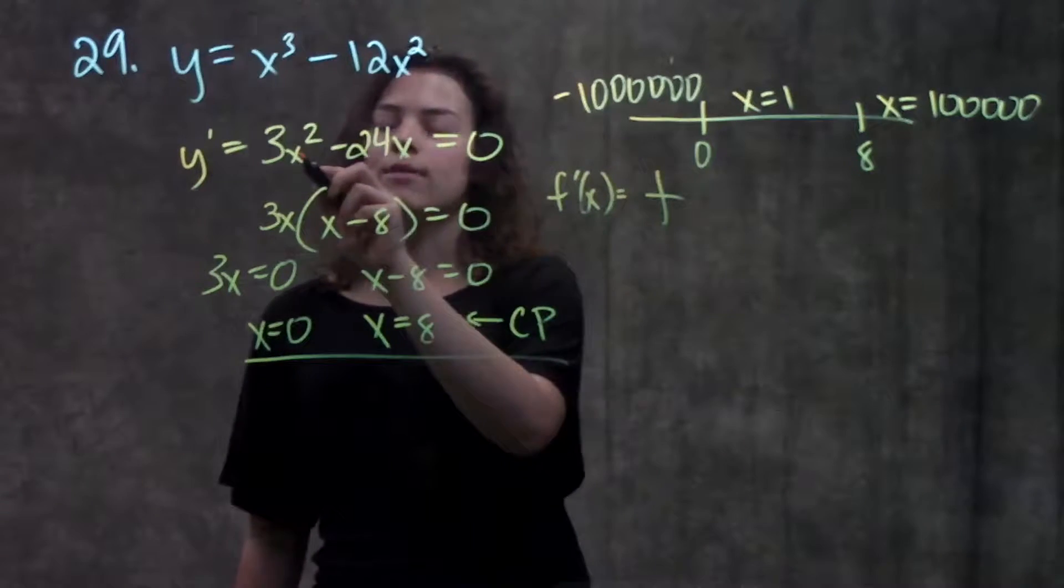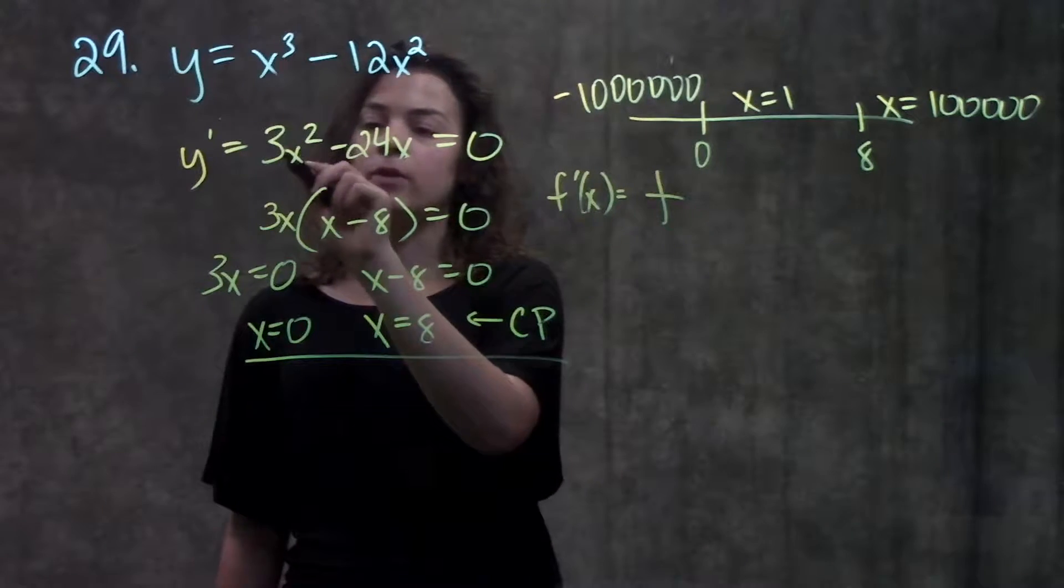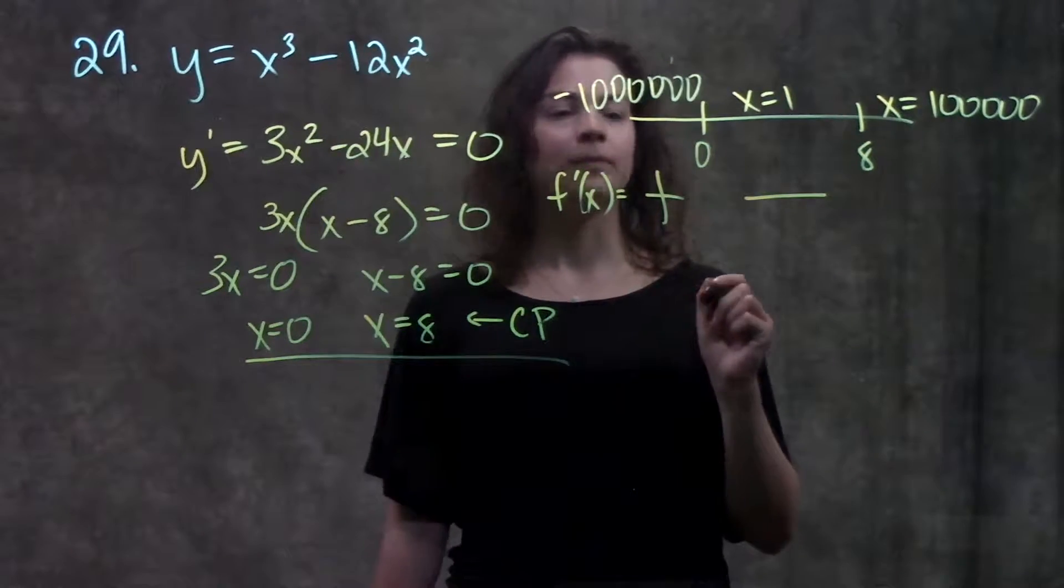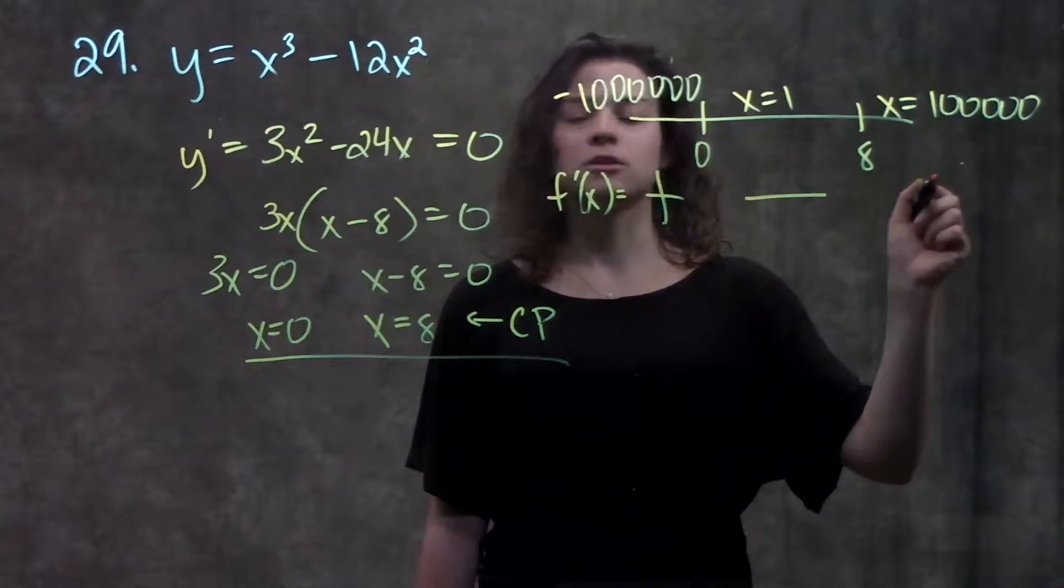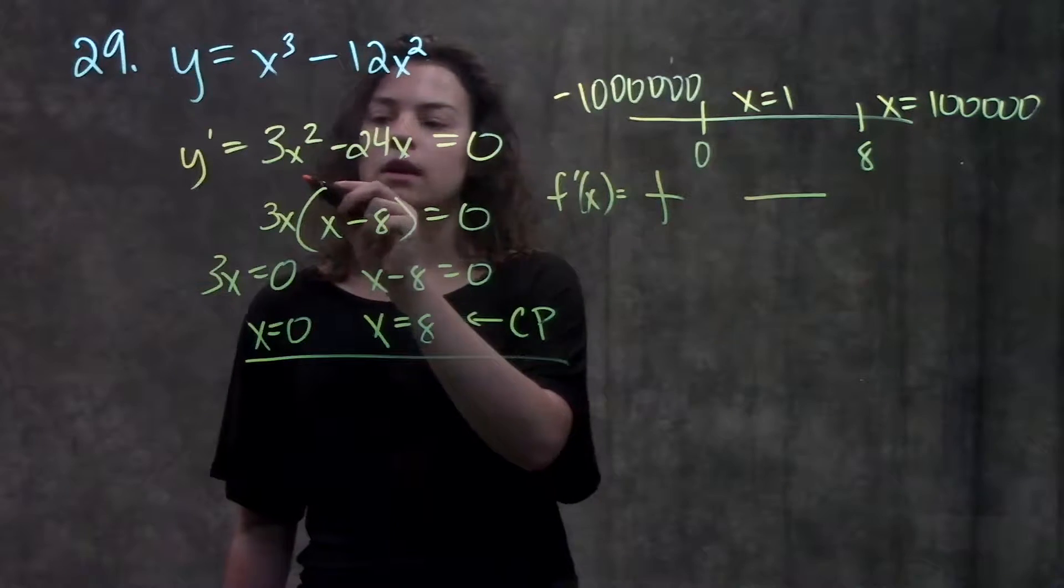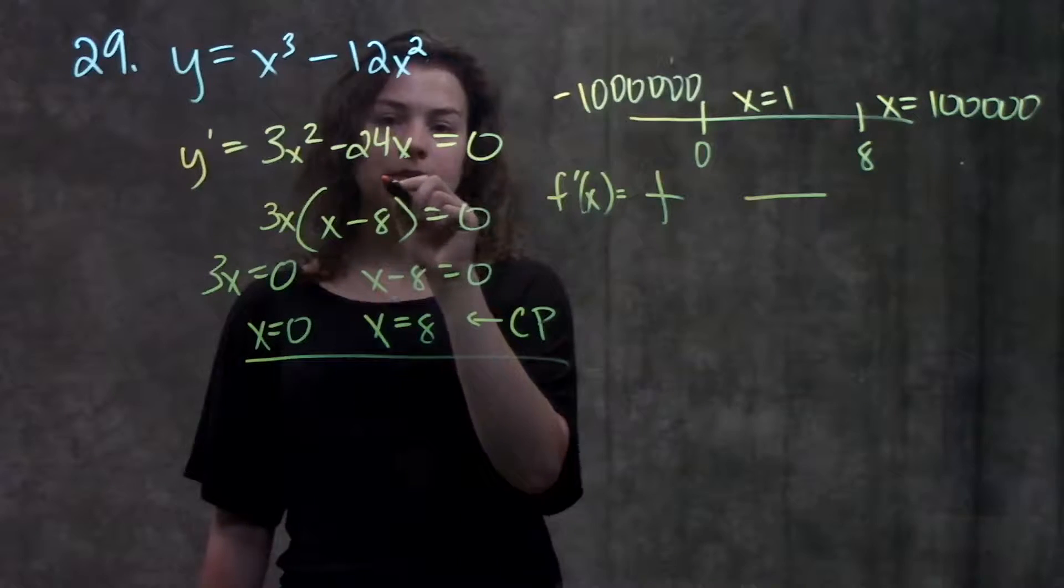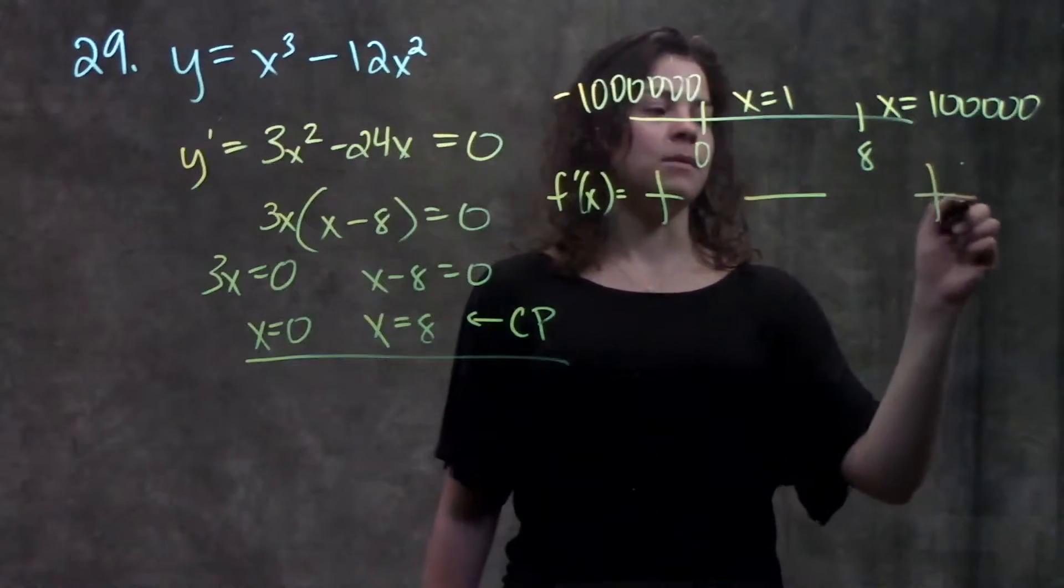What happens when I plug in 1? If I plug 1 into this function, I'd end up with 3 minus 24, that'll give me negative. And over here on this interval, if I plug in a super huge positive number, I'm going to get a really big positive number here minus a smaller positive number here, leaving me with positive.